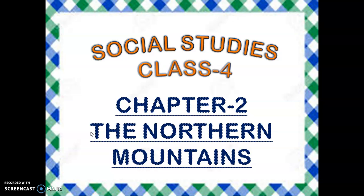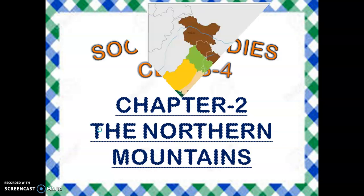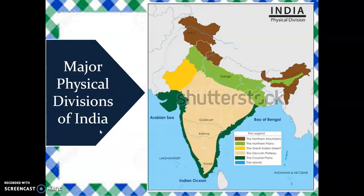Hello class. Today we will study the second chapter of the social studies book and the name of the chapter is Northern Mountain. We have already studied about the major physical divisions of India in the previous chapter. This brown color on the map represents the northern mountain. We will study and discuss about the northern mountain in detail in this chapter.